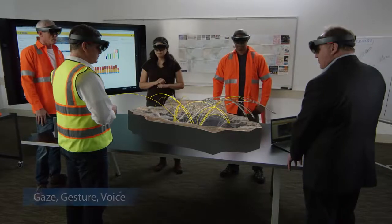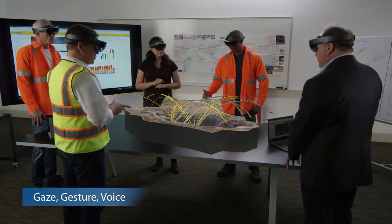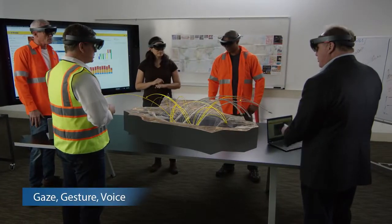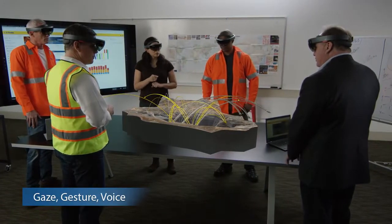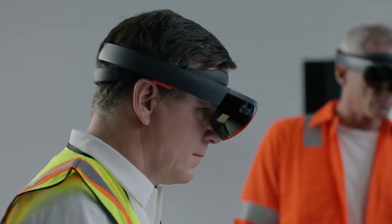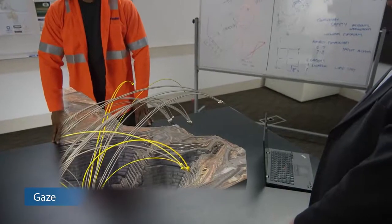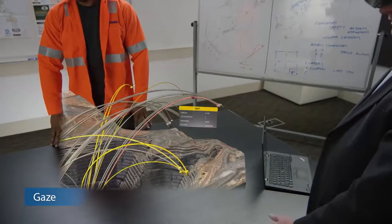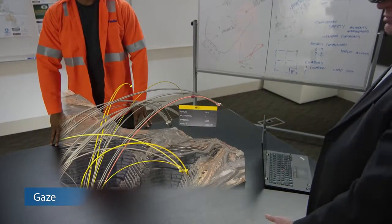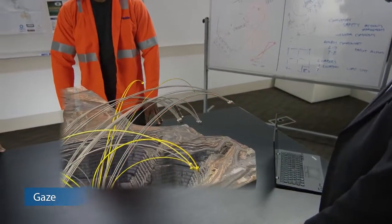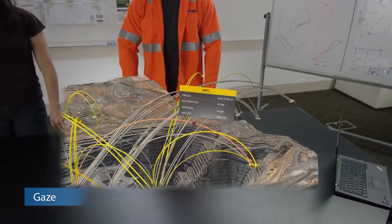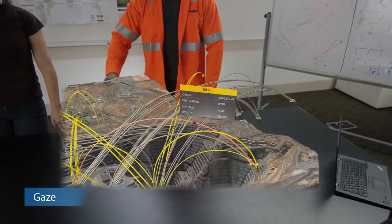To visualize and interact with holograms, the HoloLens uses gaze, gesture, and voice inputs. Your gaze, similar to your mouse, controls your cursor. Move your head around and your cursor follows, centered in your field of view.